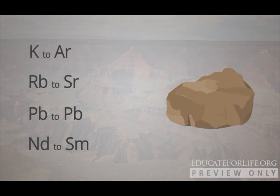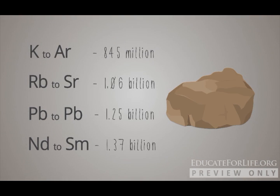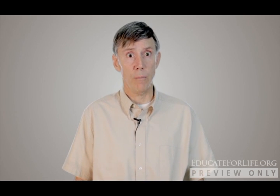What happens when you apply multiple isotope dating techniques to the same rock? An ideal rock body at the bottom of Grand Canyon was dated using four independent methods, and the ages ranged from 845 million all the way up to 1.37 billion years. Which one is the true age? Do we have a basis for accepting one and rejecting the other three? No, because the data look good on all four of them. You have to be arbitrary in selecting one over another.